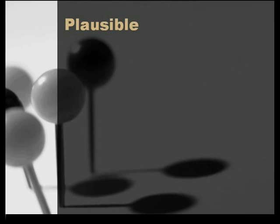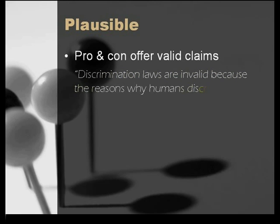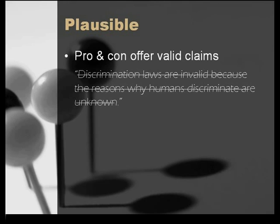To be plausible, those who debate your topic must be able to offer valid reasons for their position. Consider this claim: discrimination laws are invalid because the reasons why humans discriminate are unknown. While some human behavior is indeed a mystery, that is not a valid reason for negating our laws against discrimination. This lack of plausibility calls into question a paper topic that tries to argue the invalidity of discrimination law — it's difficult to offer plausible claims for that position, although it is debatable.